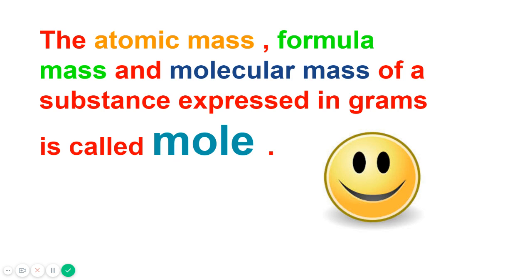Now let's see what a mole is. The atomic mass for elements, the formula mass for ionic compounds, and the molecular mass for covalent compounds of a substance expressed in grams is called a mole. So the mass expressed in grams is called a mole.